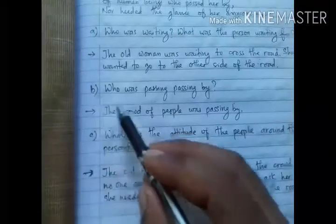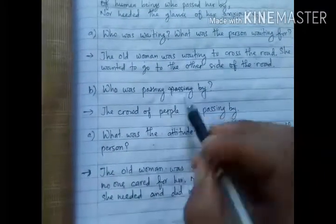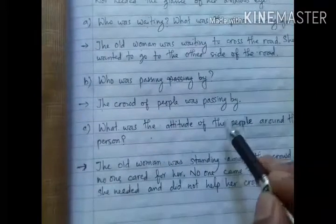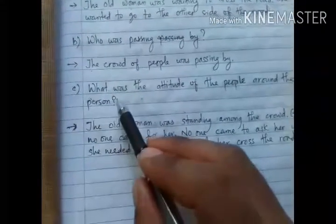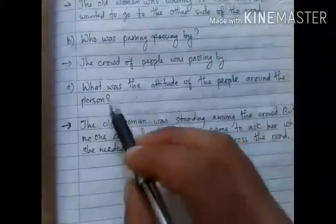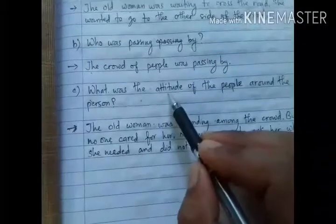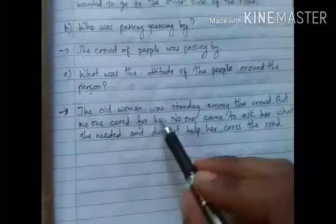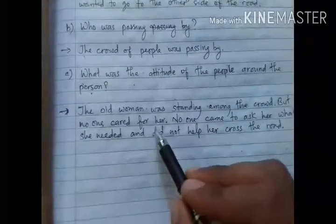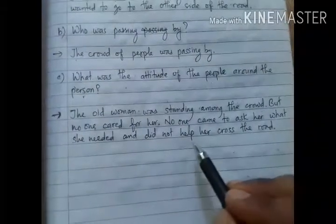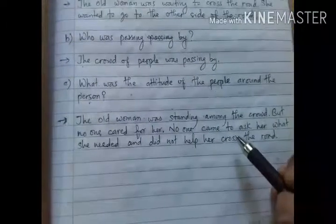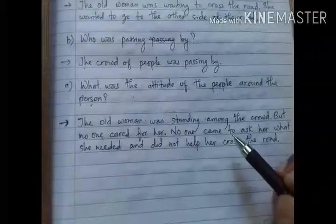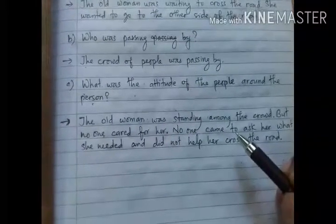Question 2B: Who was passing by? The old woman was standing among the crowd of people, and the crowd of people was passing by. Question 2C: What was the attitude of people around the person? The old woman was standing among the crowd but no one cared for her, no one came to ask what she needed, and no one helped her cross the road. The attitude of the people was not good towards this old woman.